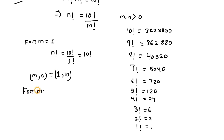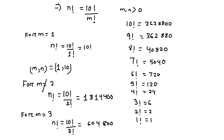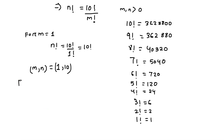For m equals to 2, n factorial will be 10 factorial divided by 2 factorial, which equals 1,814,400. From the factorial list you can see that this is not a perfect factorial value, so m equals to 2 gets discarded. For m equals to 3, n factorial equals 10 factorial divided by 3 factorial equals 604,800 — not a perfect factorial, so m equals to 3 is discarded. For m equals to 4, n factorial equals 10 factorial divided by 4 factorial, giving 151,200 — also not a factorial value, so m equals to 4 is discarded.